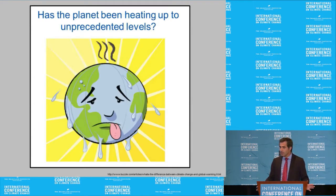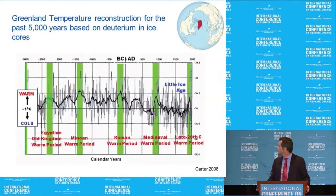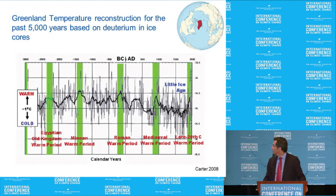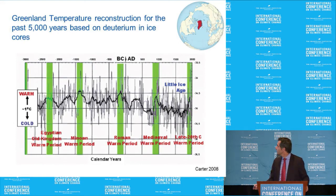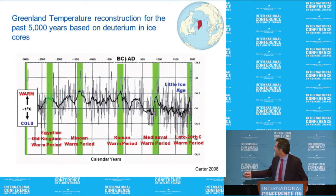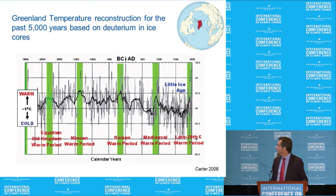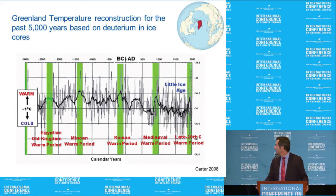Another question: is the current warmth unprecedented? A graph of temperature reconstruction in Greenland — I think by Bob Carter — shows we are here, having been going up. Looking back: Little Ice Age, Medieval Warm Period, cold phase of the Migration Period, Roman Warm Period, and other warm periods. There's a repetition — as a geologist, I see this as a cycle, and we are just in another of these cycles.